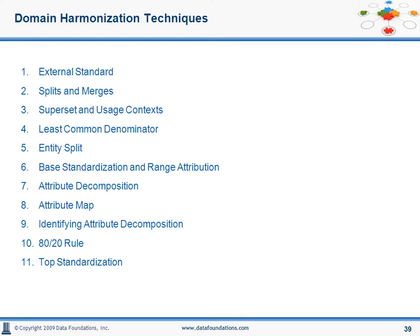Create supersets with usage contexts — one without the other will not resolve the issue. In the absence of a superset, there is no gold standard, as variations are not accounted for. In the absence of usage contexts, there is no way to enforce the prescribed standard. Look for low-hanging fruit if it works — remember the least common denominator approach or the 80-20 rule. Assume variations and deviations are real and account for them up front, rather than trying to force fit a square peg into a round hole.